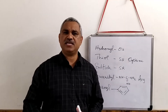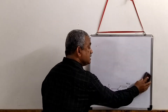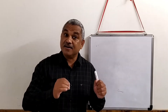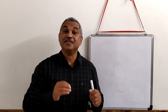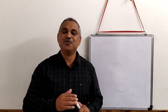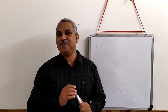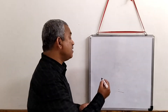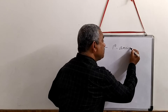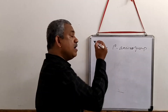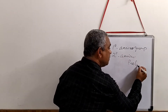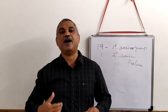The discovery of amino acids began in the early 1800s and took about 120 years to discover all the amino acids. As we know today, there are 20 standard amino acids. Out of the 20 amino acids, 19 of them have a primary amino group, and only one has a secondary amino group - and that is proline.